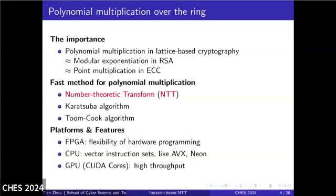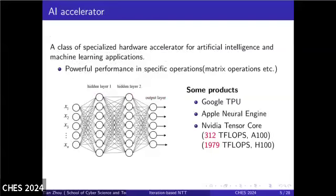AI accelerators are specialized hardware designed to speed up AI and machine learning tasks by optimizing complex computations like matrix operations. Notable examples include Google's TPU, Apple's Neural Engine, and NVIDIA's tensor cores, with the A100 achieving a computation performance of 320 TFLOPS and the H100 reaching up to 1979 TFLOPS. As hardware continues to evolve, performance is experiencing repeated and substantial improvements.